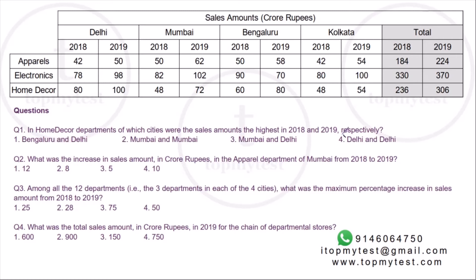Question 1 was already solved as option 4. For Question 2: what was the increase in sales amount in the apparel department of Mumbai from 2018 to 2019? That's from 50 to 62, an increase of 12. Option 1.